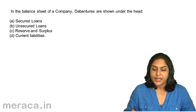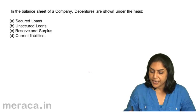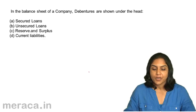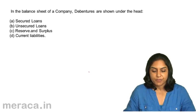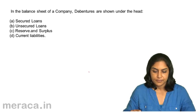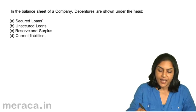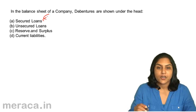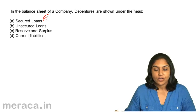First, in the balance sheet of a company, debentures are shown under the head: A. Secured loans, B. Unsecured loans, C. Reserves and surplus, D. Current liabilities. The correct answer is A. Secured loans. Debentures are usually part of secured loans.